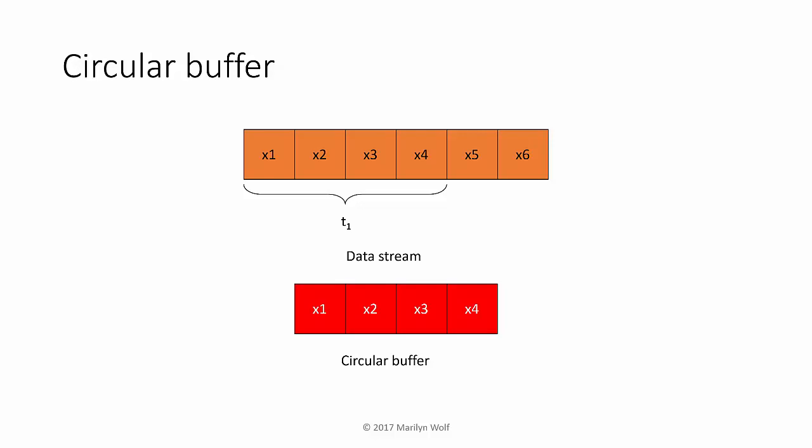Our circular buffer has four entries, one for each of these values. At the next time sample, we still use x3, x4, and x5. At the next time, t2, we no longer need x1. We use x2, x3, and x4, and we add a new value, x5.